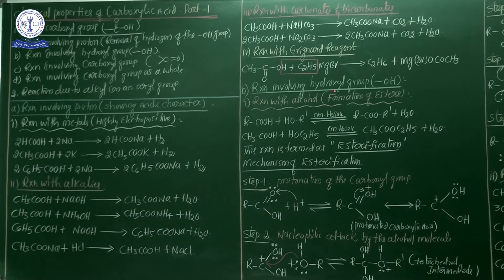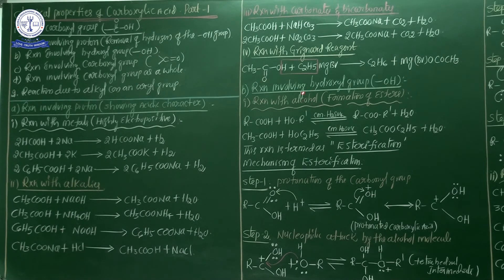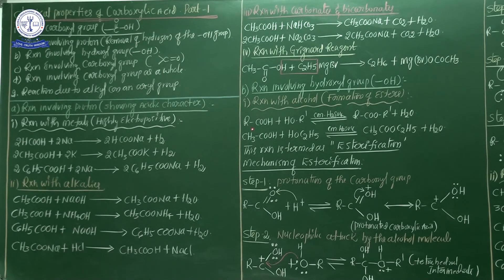First chemical property from reactions of hydroxyl group: formation of ester — esterification. This is generally esterification. Whenever carboxylic acid is treated with alcohol, ester is formed. This chemical process is called esterification. Carboxylic acid reacted with alcohol in the presence of concentrated sulfuric acid forms ester. When fatty acids are heated with alcohol in the presence of a dehydrating agent such as sulfuric acid, ester is formed.